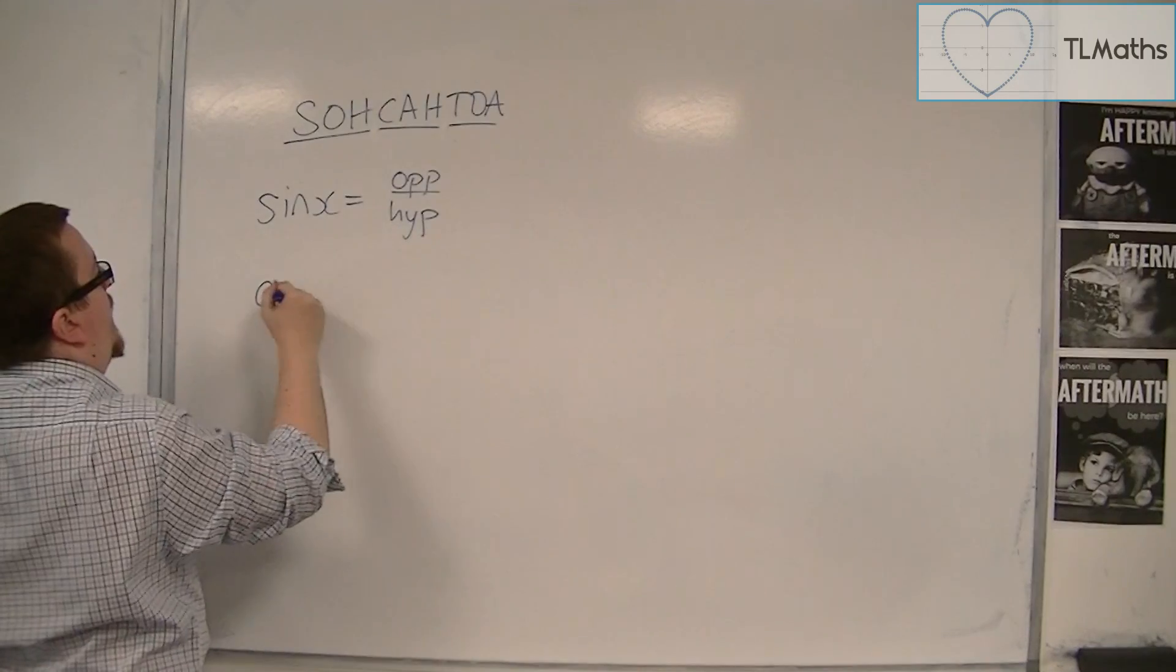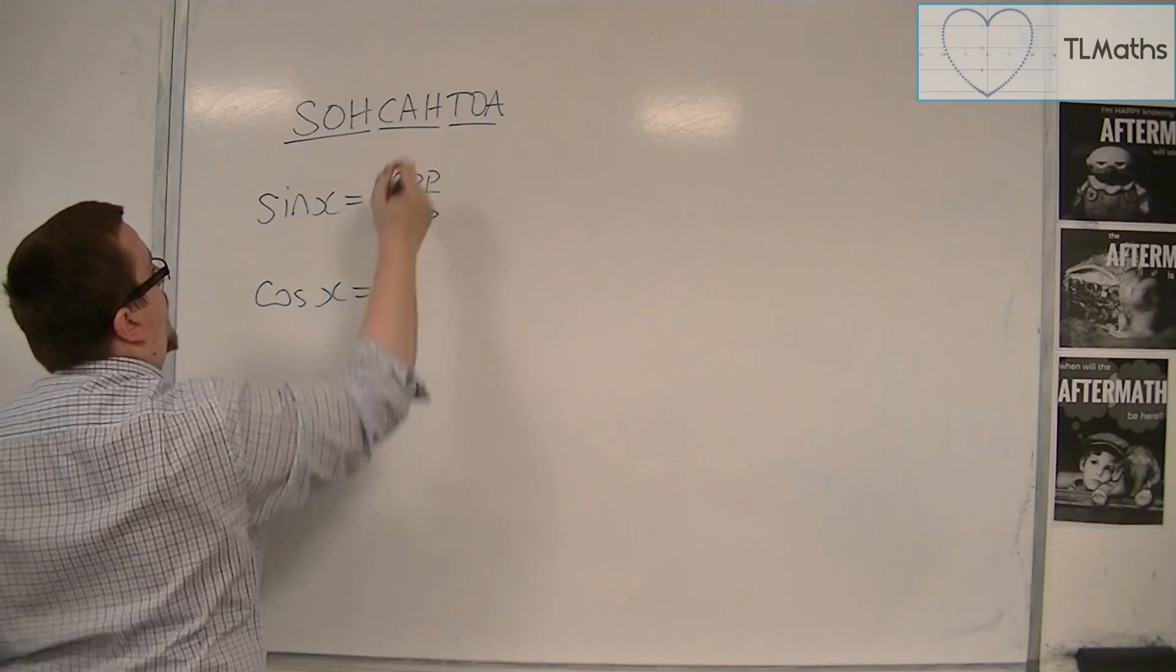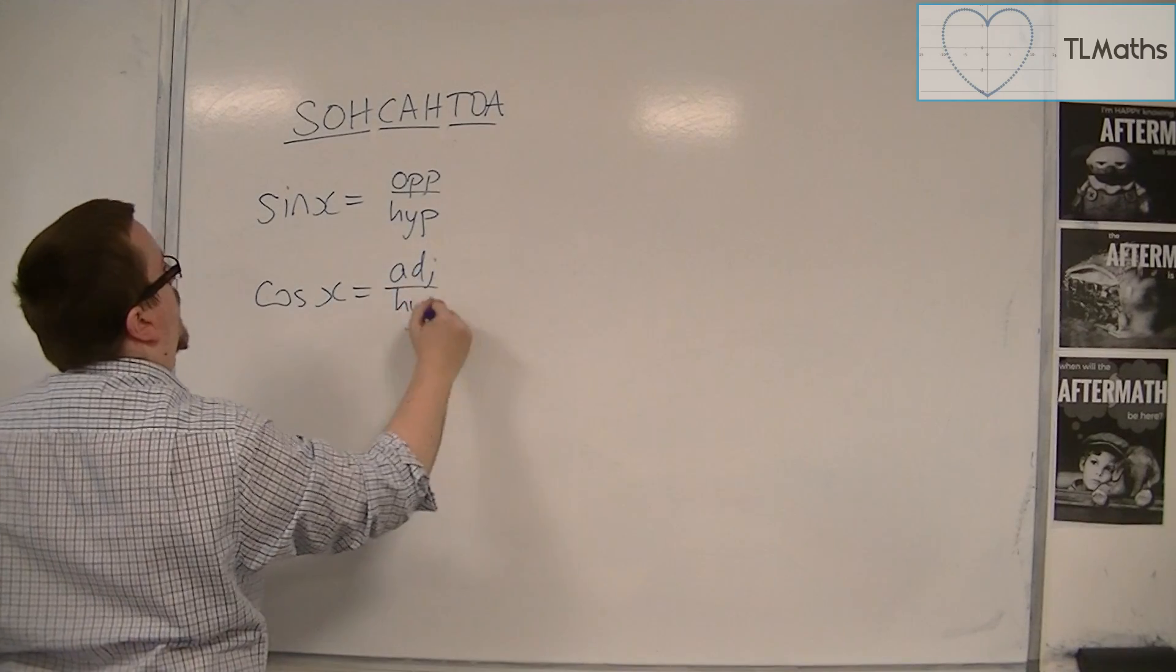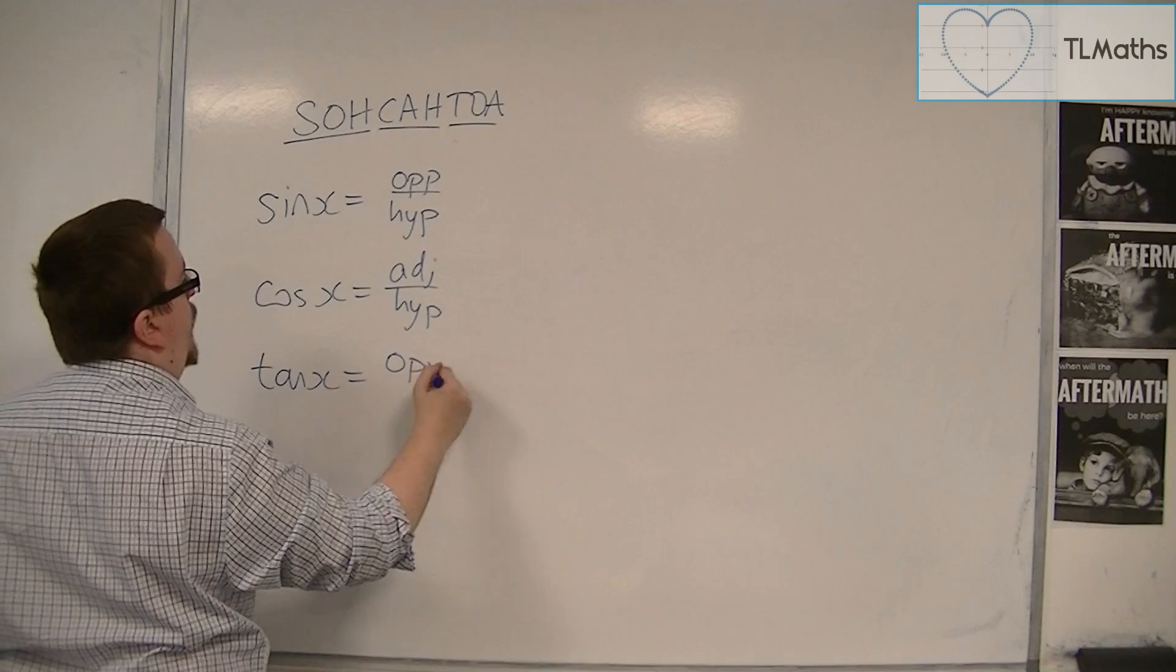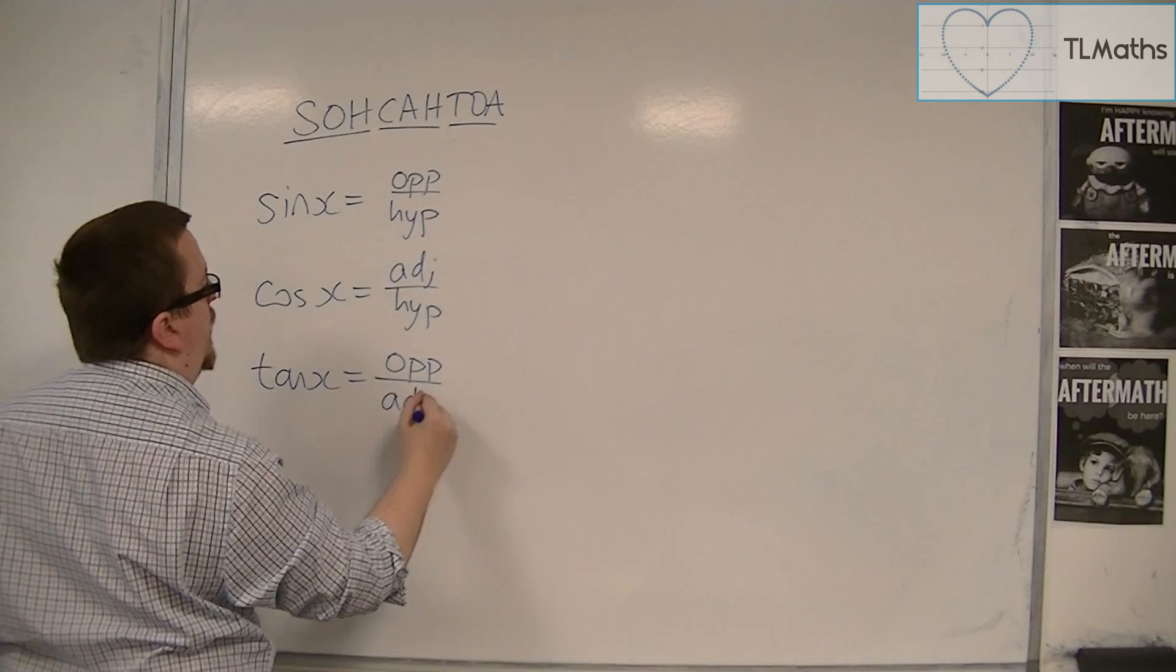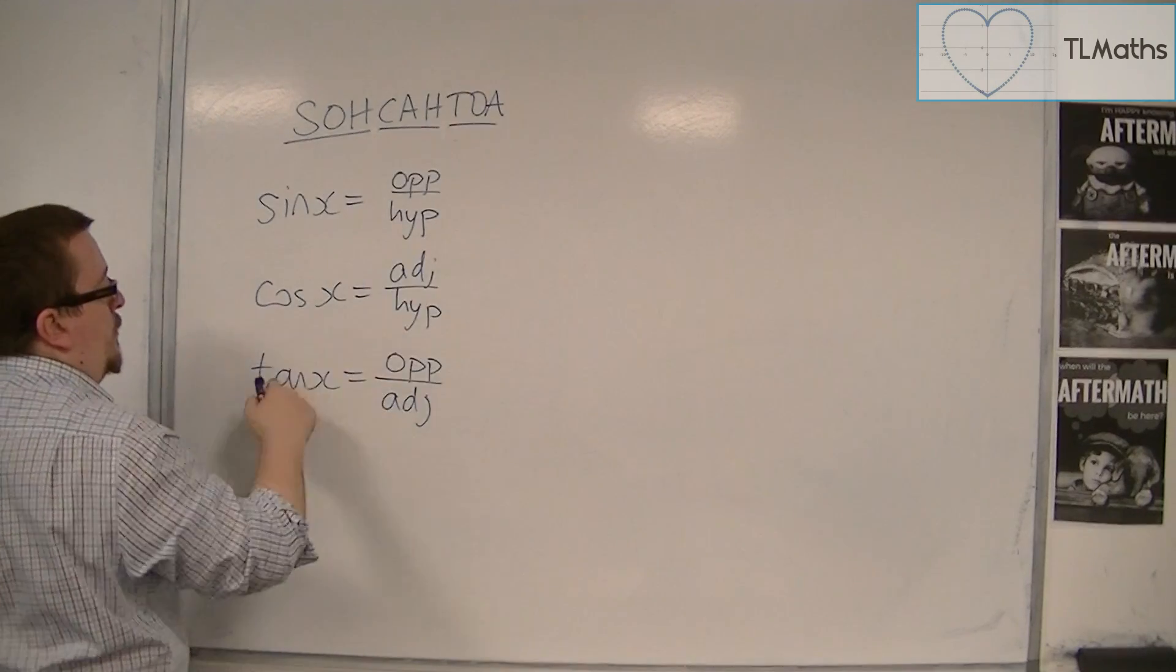Cosine of x is equal to the adjacent over hypotenuse. And tan x is equal to the opposite over adjacent. So SOHCAHTOA.